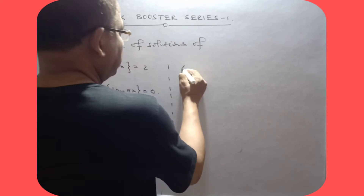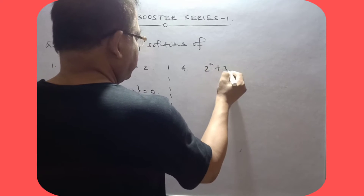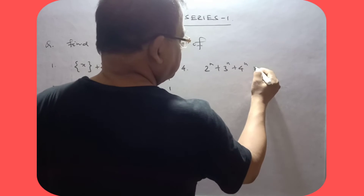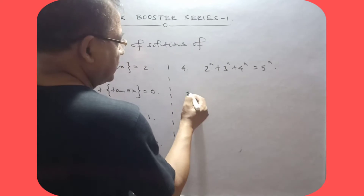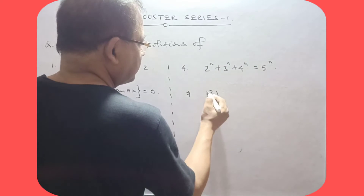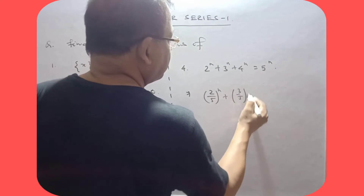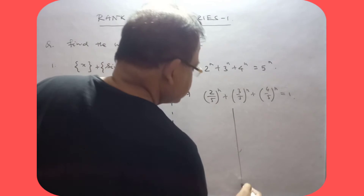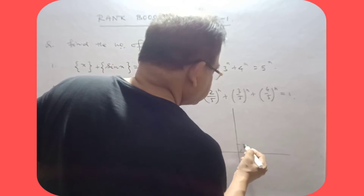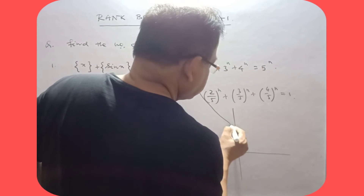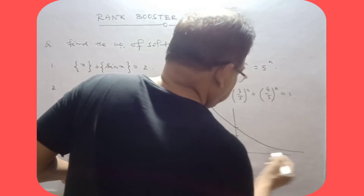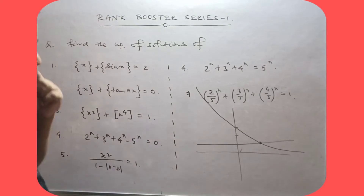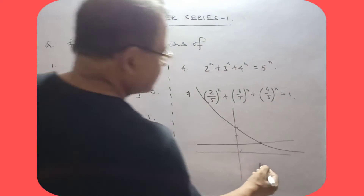Now question 4: find the number of solutions of 2^x + 3^x + 4^x − 5^x = 5^x. You can rewrite this as (2/5)^x + (3/5)^x + (4/5)^x = 1. The graph of the left side is a decreasing function. This is the line y = 1, and there is exactly one intersection, so the number of solutions is 1.